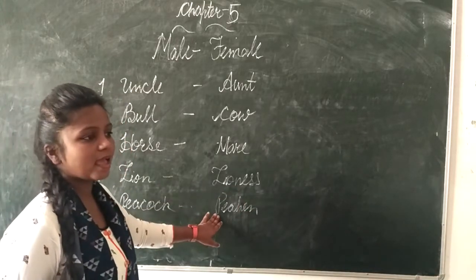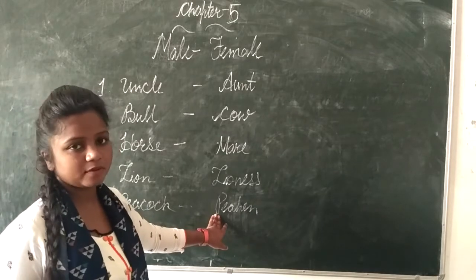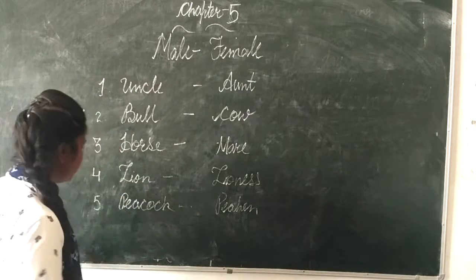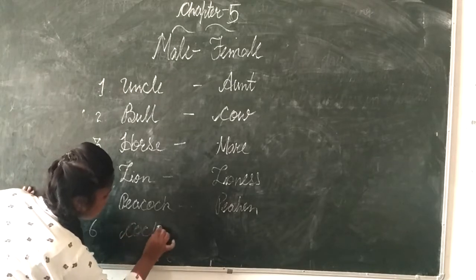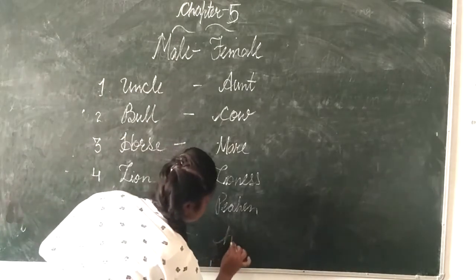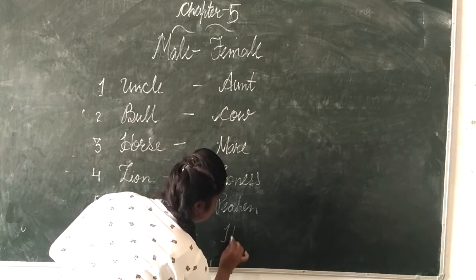And the fifth is peacock. We call peacock peahen. Peahen, we are saying. This is the one you will call. What will be? Hen. The girls. The female will be hen.